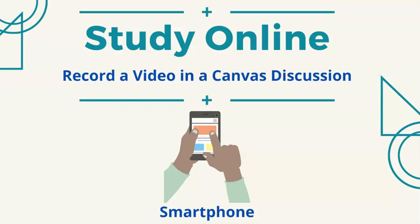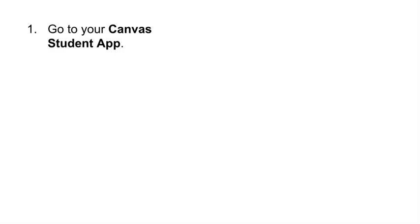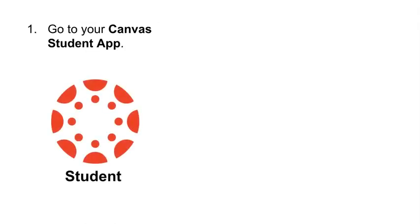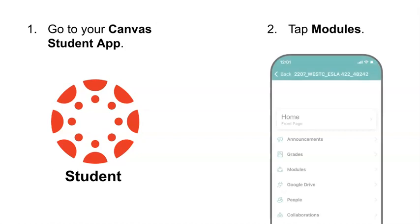Study online. Record a video in a Canvas Discussion on your smartphone. Step 1: Go to your Canvas Student app. Step 2: Tap Modules.